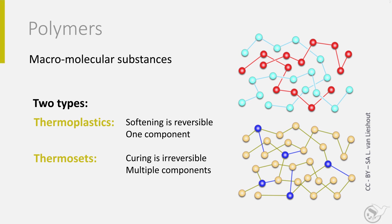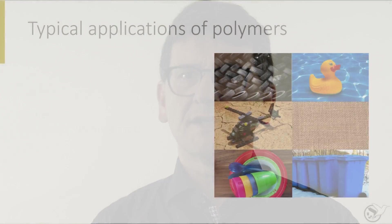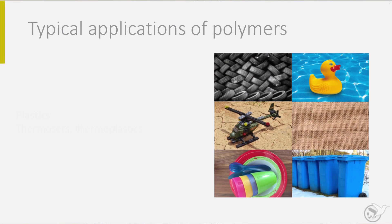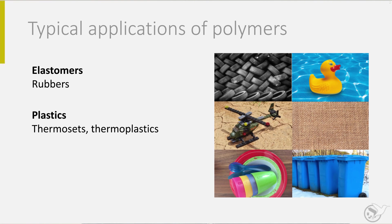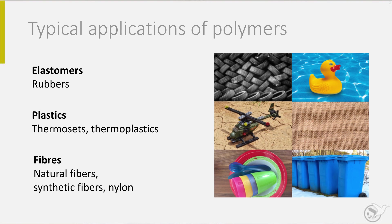Once cured and solidified, the network cannot be dissolved. Applications of polymers are abundant too. Look at the figures at the right-hand side of this slide and probably you can think of many more examples. One type of polymer not mentioned yet is the elastomer, which on a microstructural level is somewhat in between the thermoset and the thermoplastic polymers. Elastomers, or rubbers, are well known for car tires. Polymers can also be processed into fibers, used in clothes and general industrial applications.